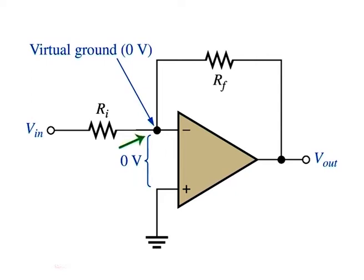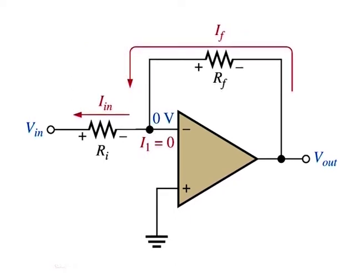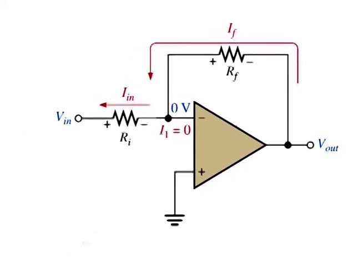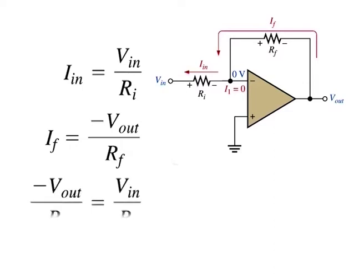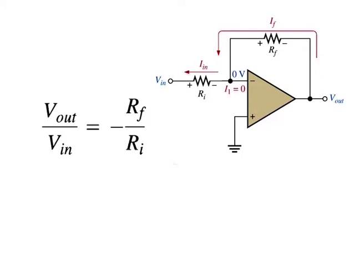Since there is no current at the inverting input, the current through RI and the current through RF are equal. Because the resistor is connected to virtual ground at the inverting input, the voltage across RI equals Vin. Therefore, Iin equals Vin over RI. Also, the voltage across RF equals minus Vout because of virtual ground, and therefore IF equals minus Vout over RF. Since IF equals Iin, minus Vout over RF equals Vin over RI. Rearranging, Vout over Vin equals minus RF over RI.